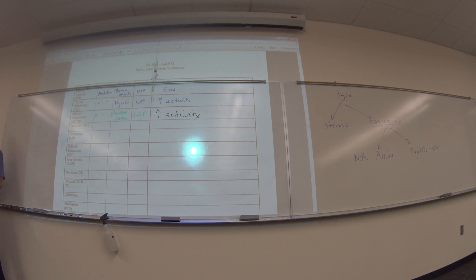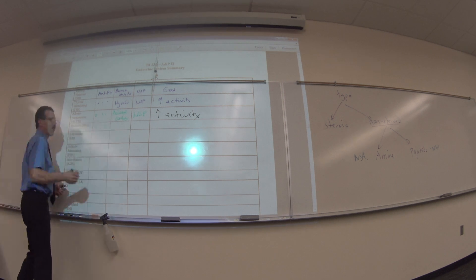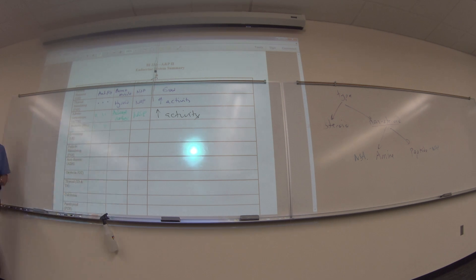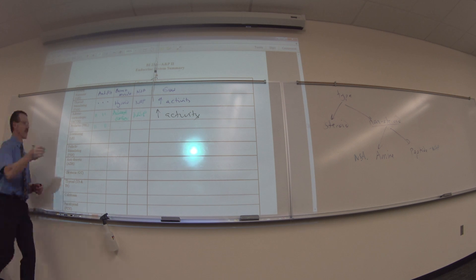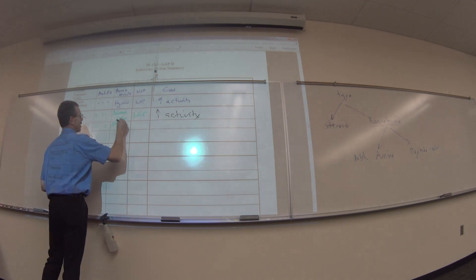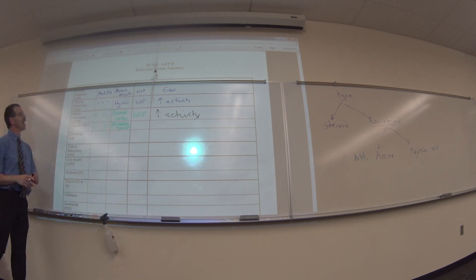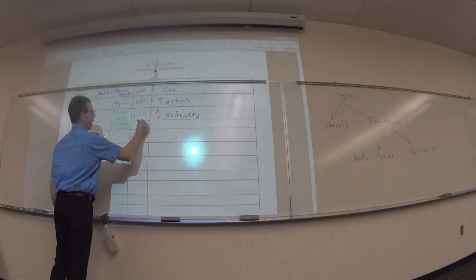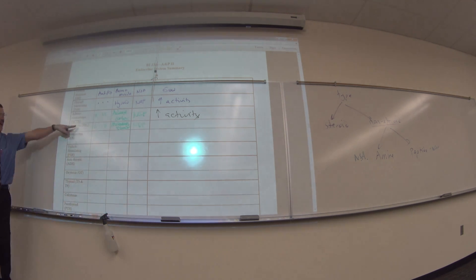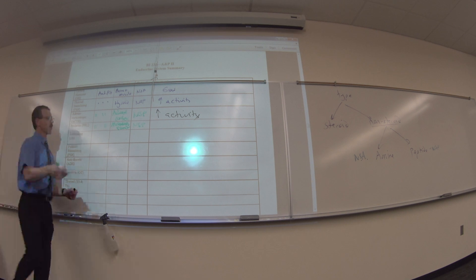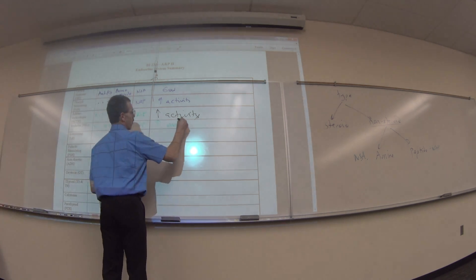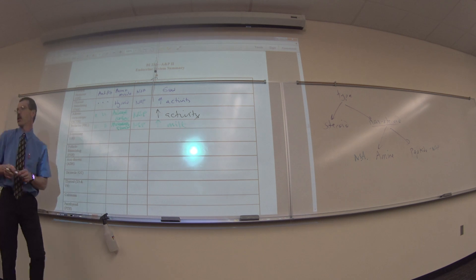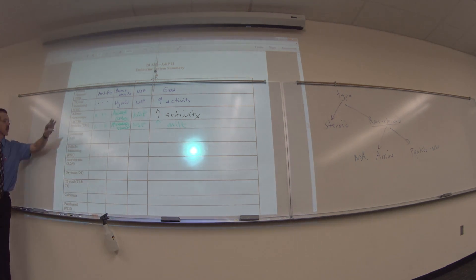So prolactin. Made where? Anterior pituitary. If you get stuck, write that. Where do you think it goes? Mammary glands. What type is it? NSP. What does prolactin do? Lactin. Increase milk production. Stimulate milk production. Prolactin in favor of milking.